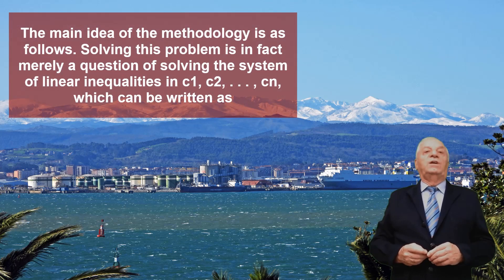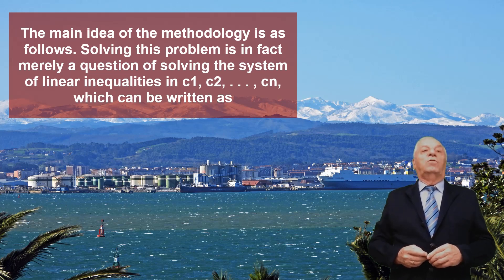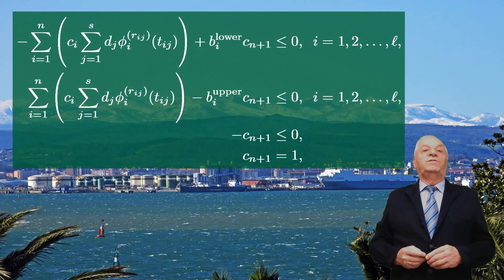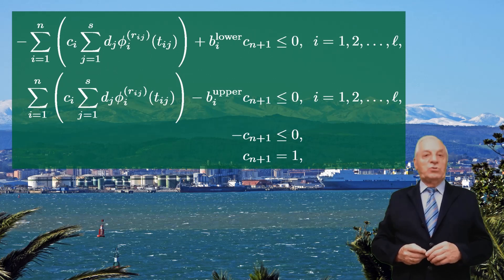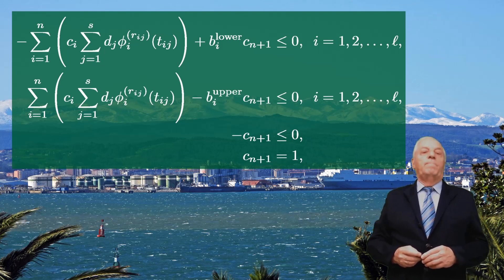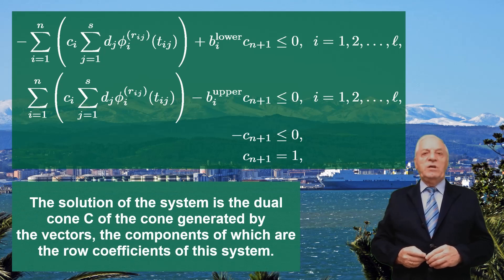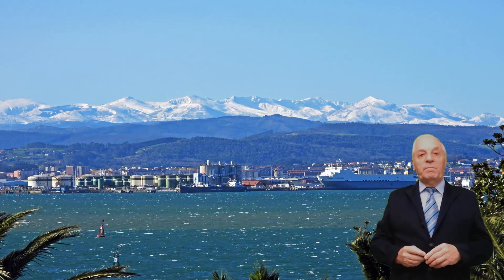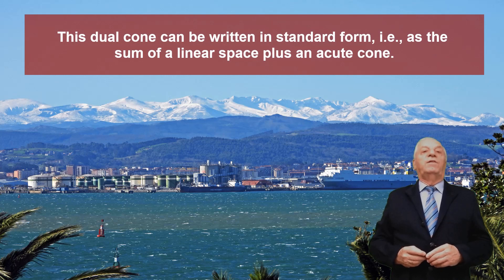The main idea of the methodology is as follows. Solving this problem is in fact merely a question of solving a system of linear inequalities in which C1, C2, ..., Cn can be written as indicated, where artificial variable Cn+1 and the redundant constraint −Cn+1 ≤ 0 have been added for convenience, so Cn+1 must be removed later. The solution of this system is the dual cone of the cone generated by the row coefficients of the system. Standard methods for obtaining this dual cone can be seen in Padberg or Castillo et al. This dual cone can be written in standard form as the sum of a linear space plus an acute cone.